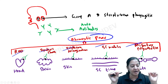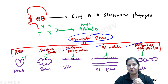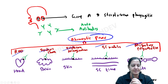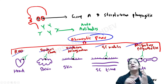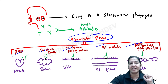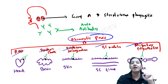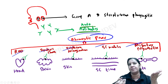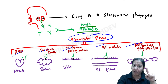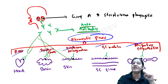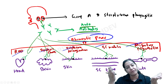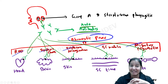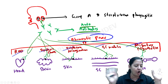Rheumatic fever is not caused by bacteria — it is caused by autoantibodies of the human body. These antibodies kill the bacteria but also form antigen-antibody complexes with human organs, killing the body's own cells. Therefore, rheumatic fever is an autoimmune disease. The problem is the antibody, not the bacteria.